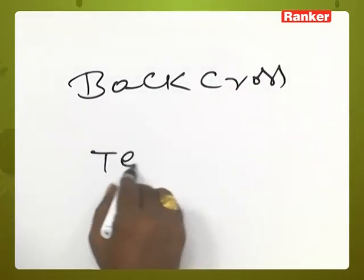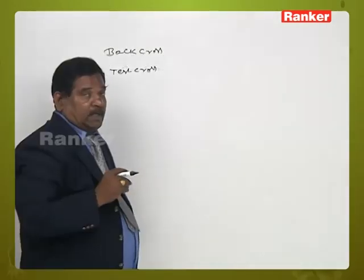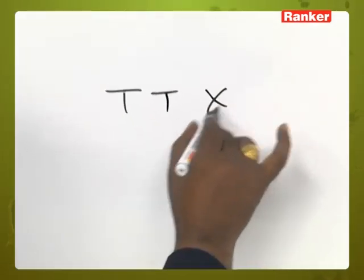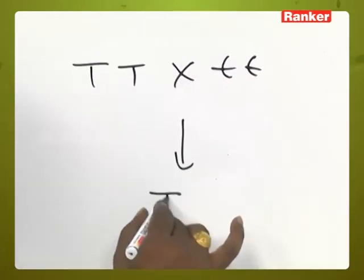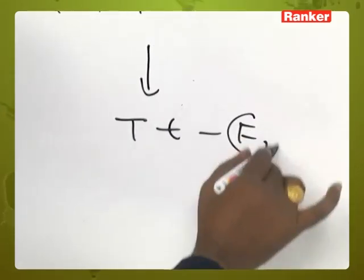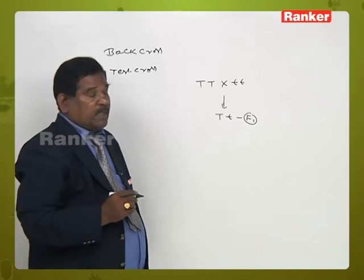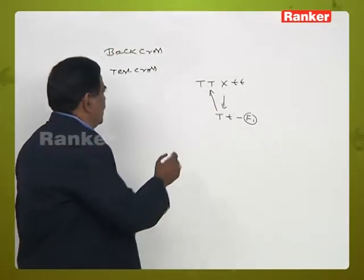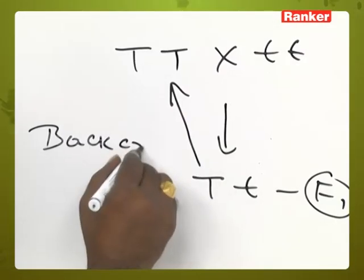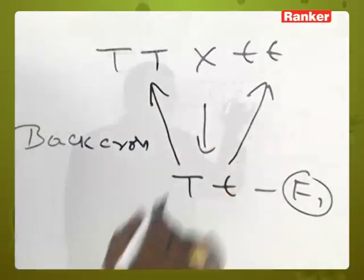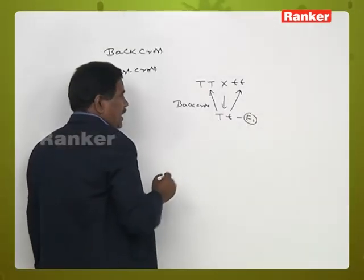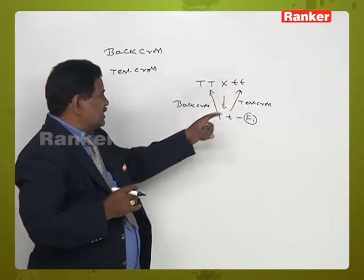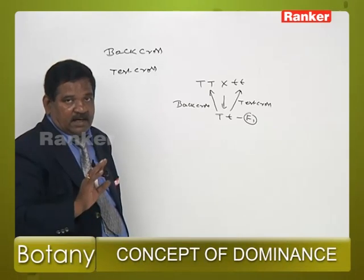Now, backcross and testcross. When pure tall is crossed with pure dwarf, we obtain hybrid tall in the F1 generation. If we cross the F1 hybrid with the dominant parent, that is called a backcross. If we cross the F1 hybrid with the recessive parent, that is called a testcross. All testcrosses are backcrosses, but not all backcrosses are testcrosses.